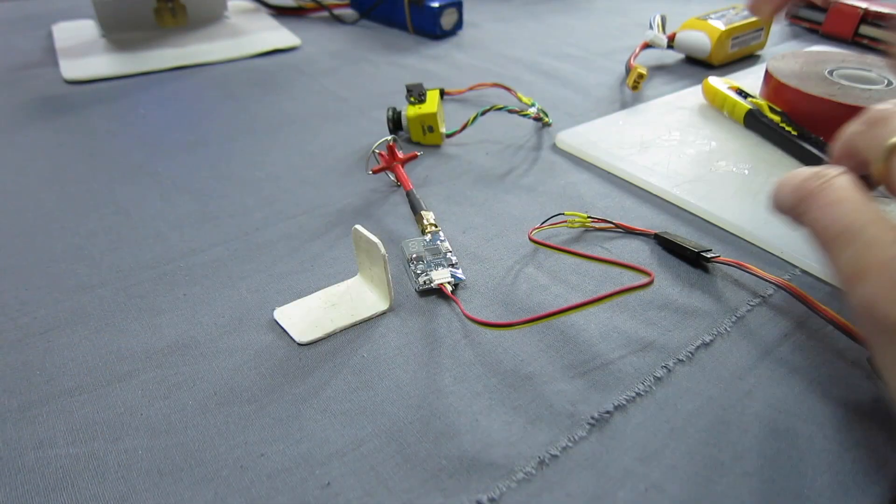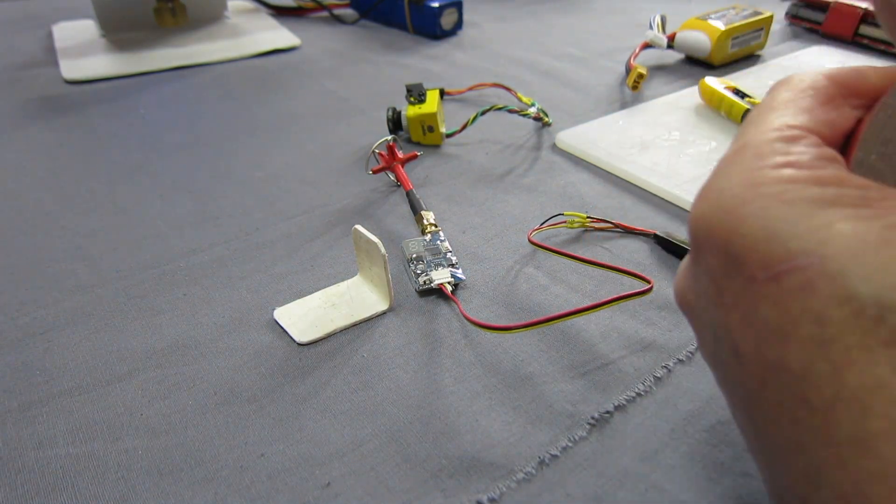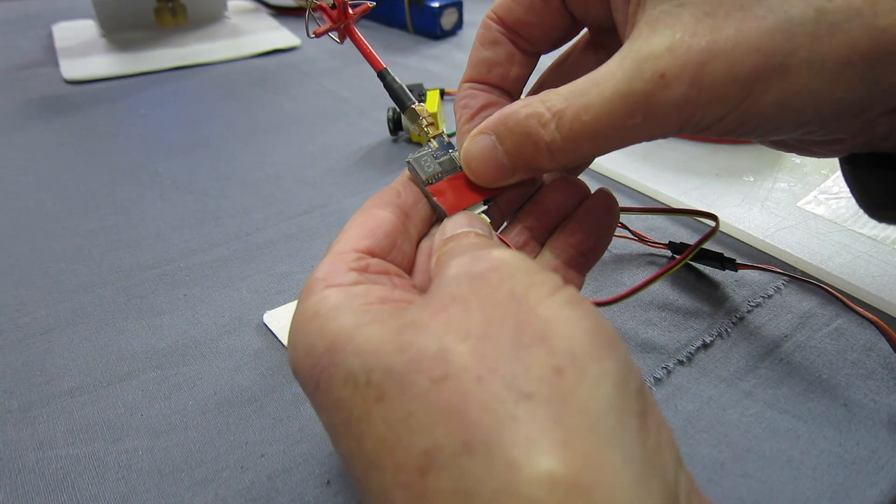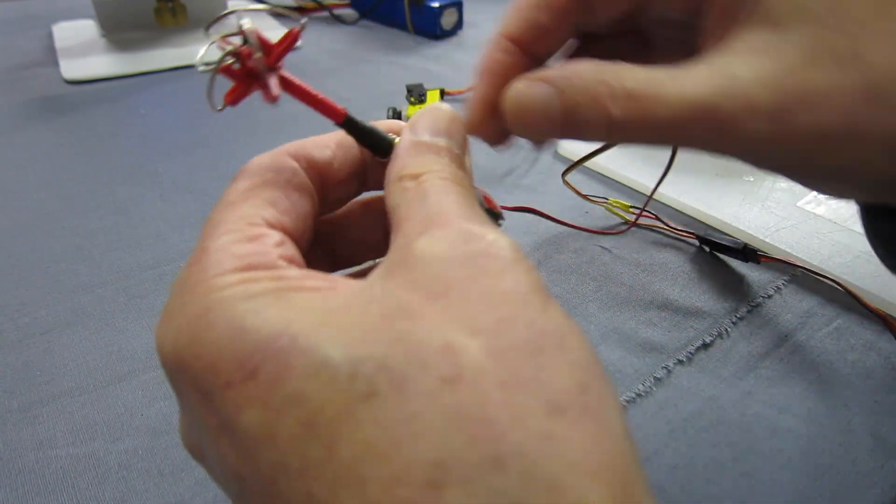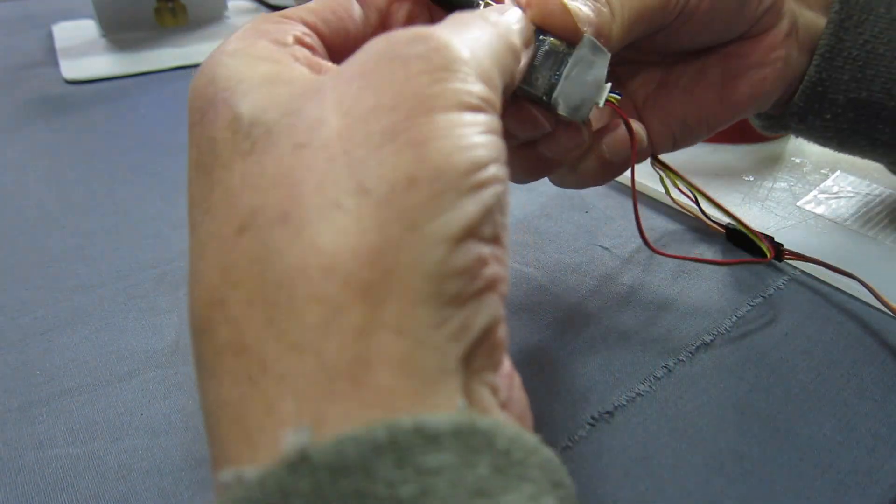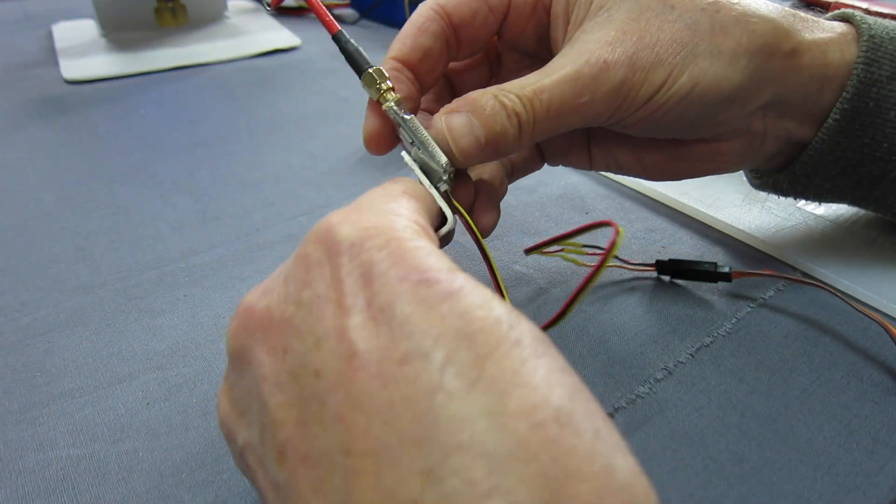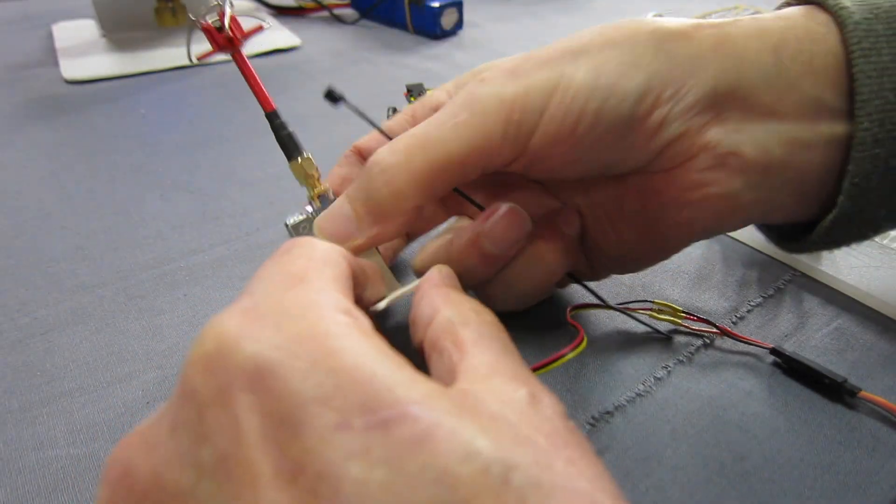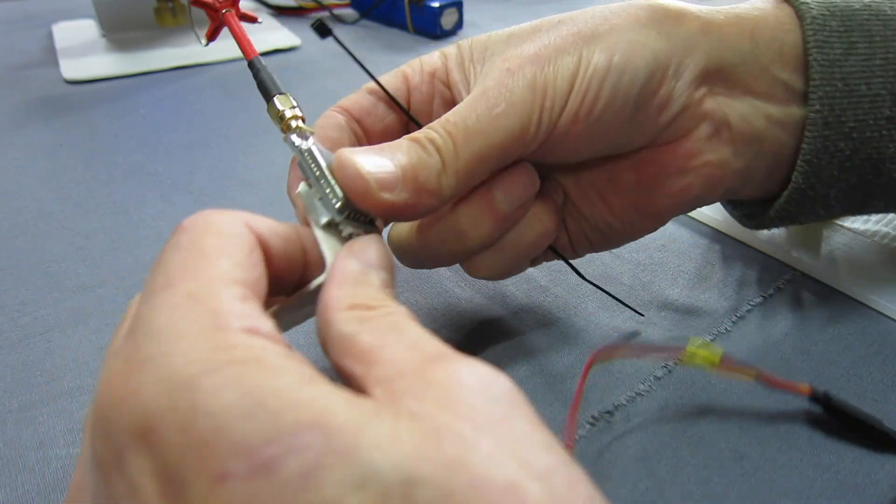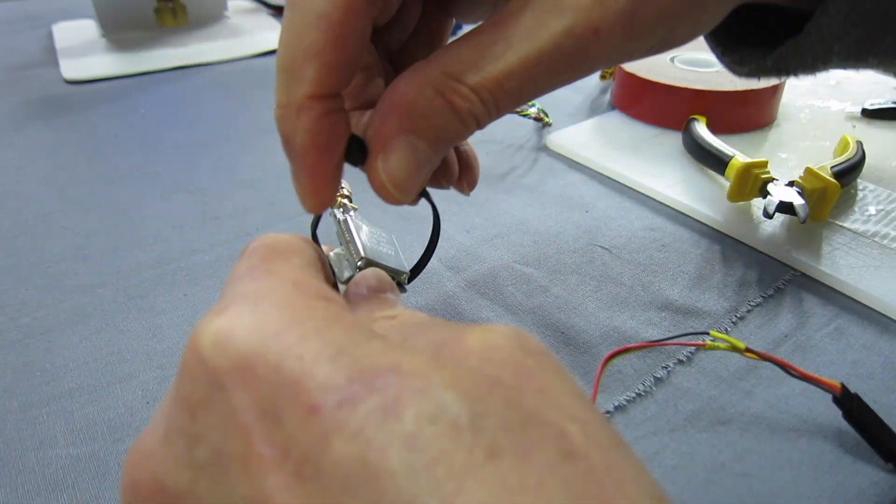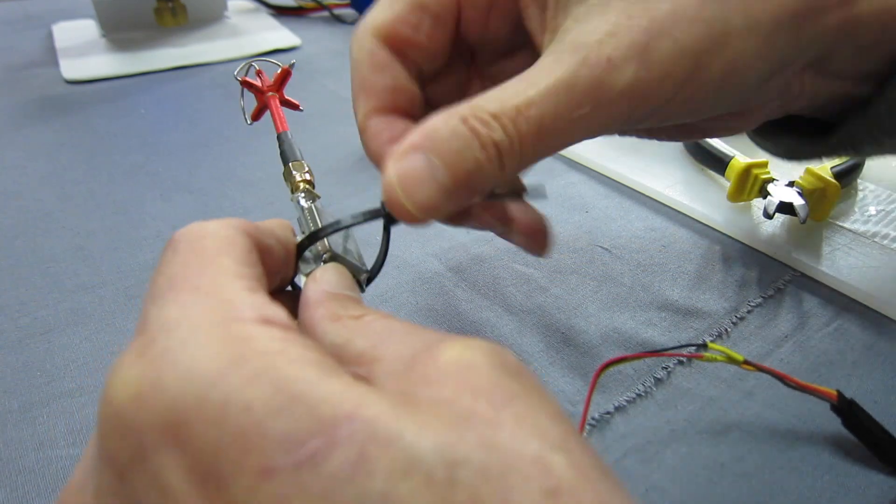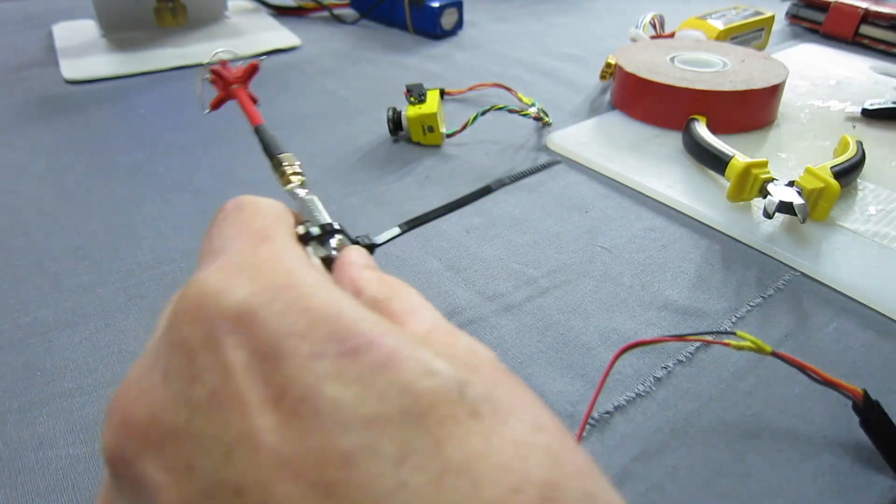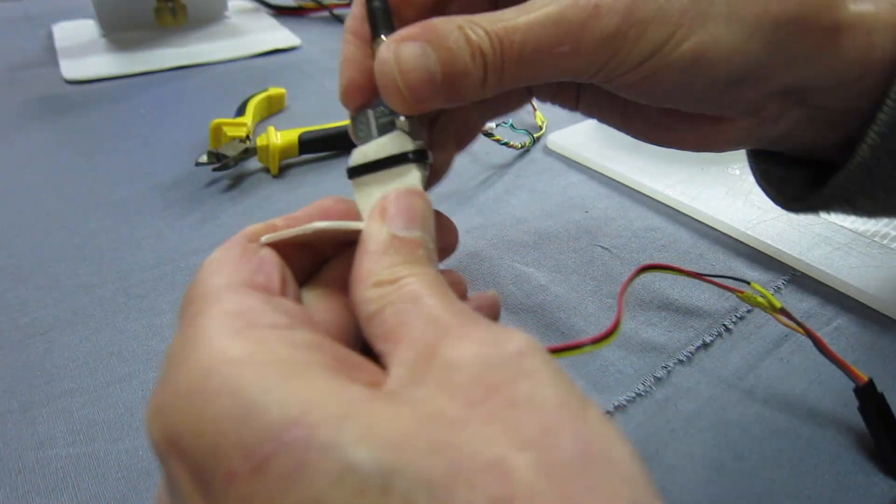Now to mount the video transmitter. I usually go for a combination of double sided tape and a cable tie. So I'll pop some double sided tape down there. So I've still got access to the button and the LED there. So I can change the channel and the band. And I'll just pop a cable tie around here. So that's solid.